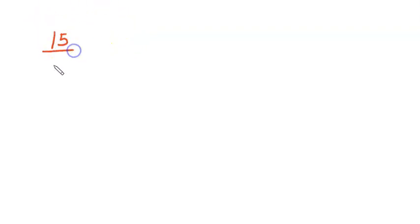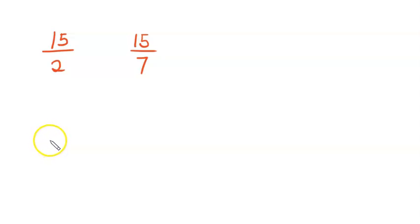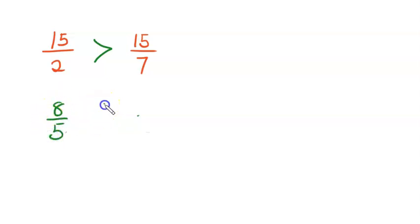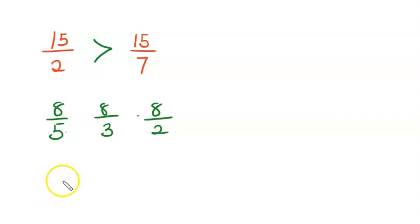For example, 15 over 2 versus 15 over 7 — which is bigger? 15 over 2 is certainly bigger, because dividing into two parts gives bigger pieces than dividing into seven. Now if we have to arrange three fractions: 8 over 5, 8 over 3, and 8 over 2 — which one is the smallest?